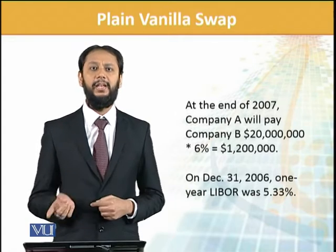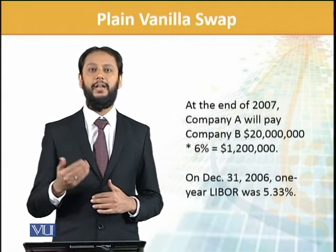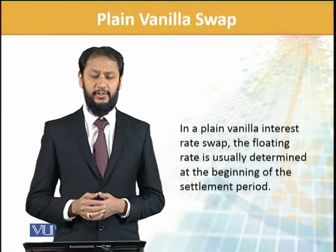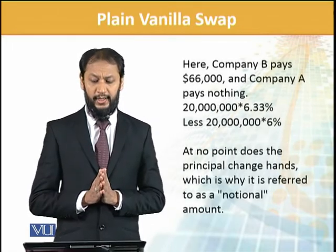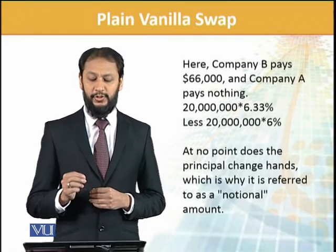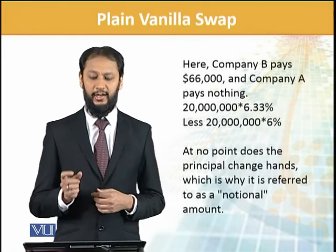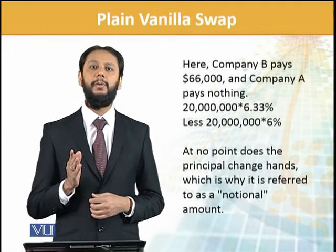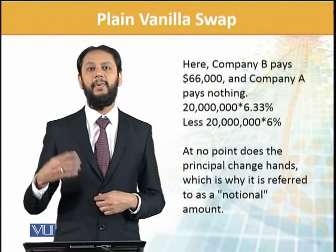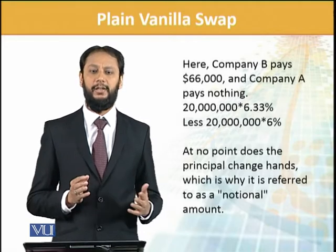So Party A pays 6% and Party B pays 6.33%, meaning Party B is paying more because LIBOR is on the higher side. If LIBOR were lower, the situation could be different. The net settlement is: 20 million × 6.33% minus 20 million × 6% = 66,000. Company B pays Company A this net amount of 66,000, and that year's settlement is cleared.